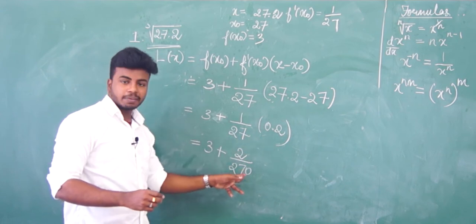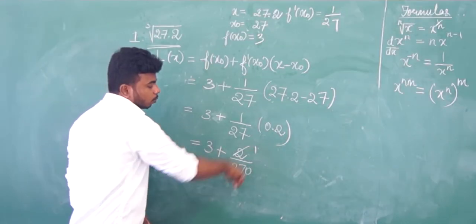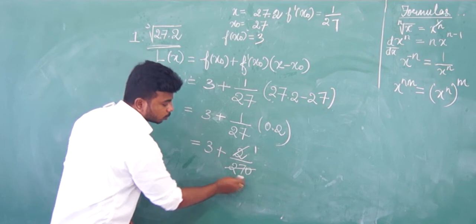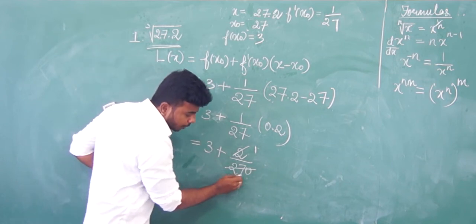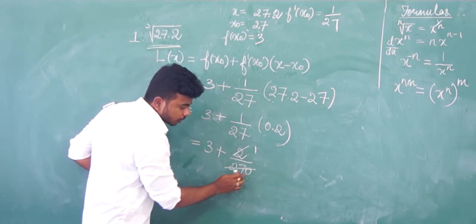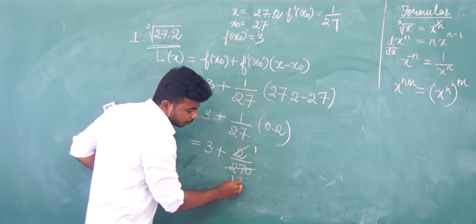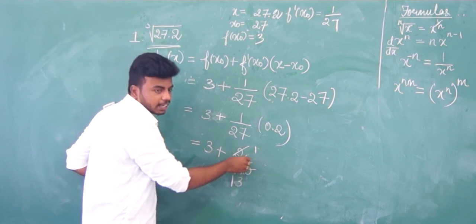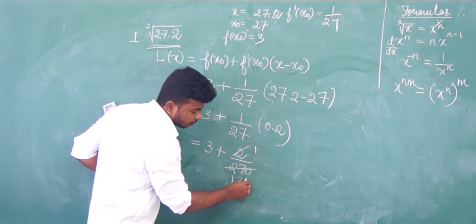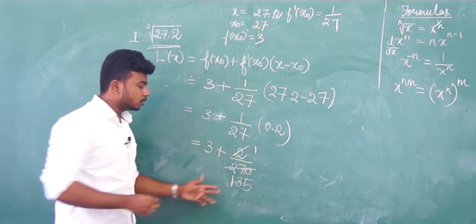We need to compute 0.2 divided by 27, which is 2 divided by 270, which simplifies to 1 divided by 135. So we need to find 1/135 by long division.